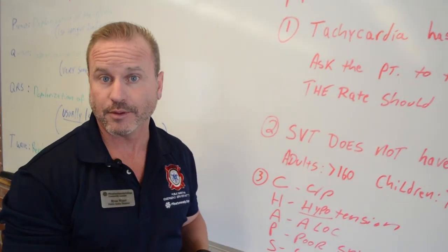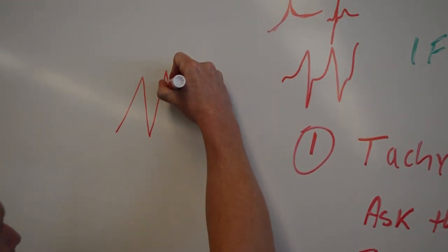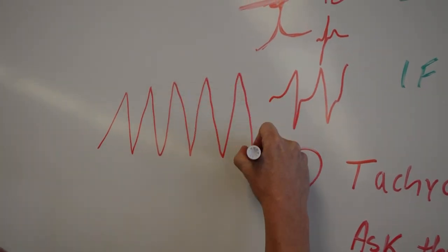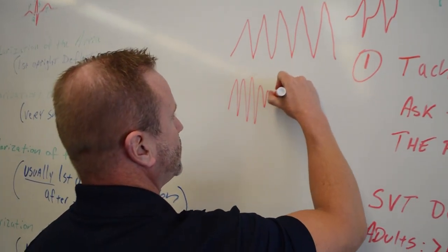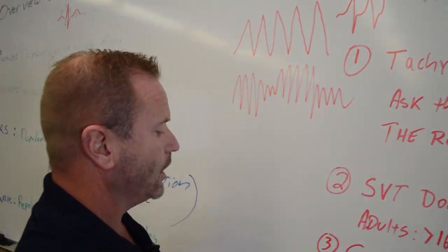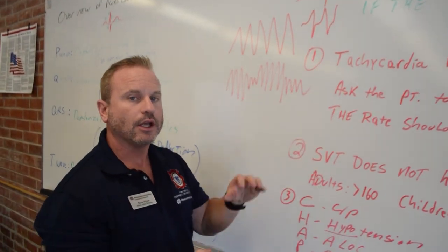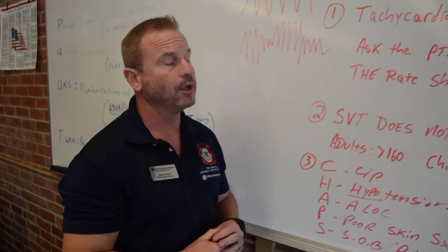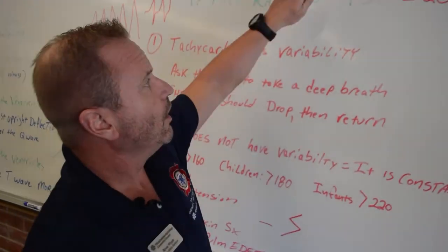Ventricular tachycardia originates in the ventricles. It's a wide, regular, complex tachycardia. There are many forms: torsades-type tachycardia, polymorphic ventricular tachycardia, or just a monomorphic tachycardia. Both could have a pulse or no pulse. When in doubt, treat it as VTAC. Ventricular tachycardia is a lethal rhythm and it precedes ventricular fibrillation, which is an absolute lethal rhythm.